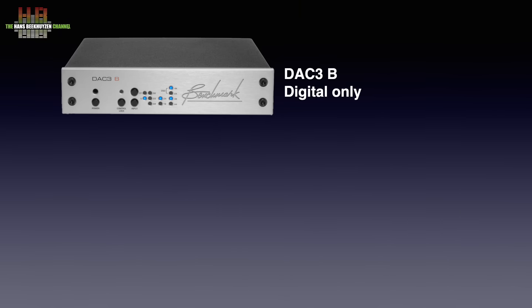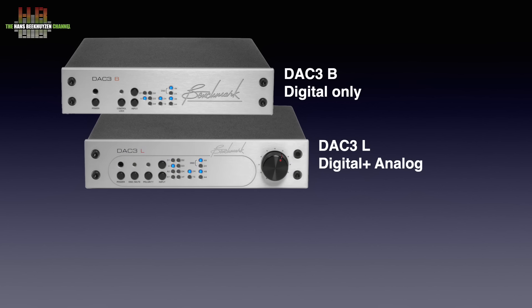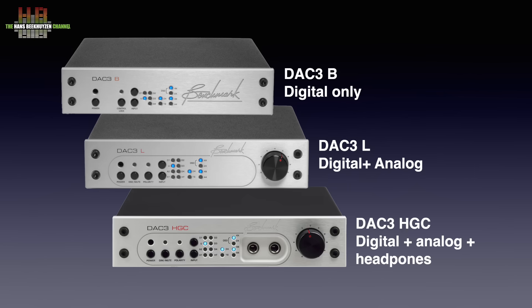The DAC-3 series consists of three models: the DAC-3B, which has only digital inputs and fixed analog outputs; the DAC-3L, which offers the same plus analog inputs and has analog and digital volume controls; and the DAC-3HGC, which has all of the above plus headphone amplifiers. I will be reviewing the DAC-3HGC, which I will refer to as the DAC-3 for the rest of this review.